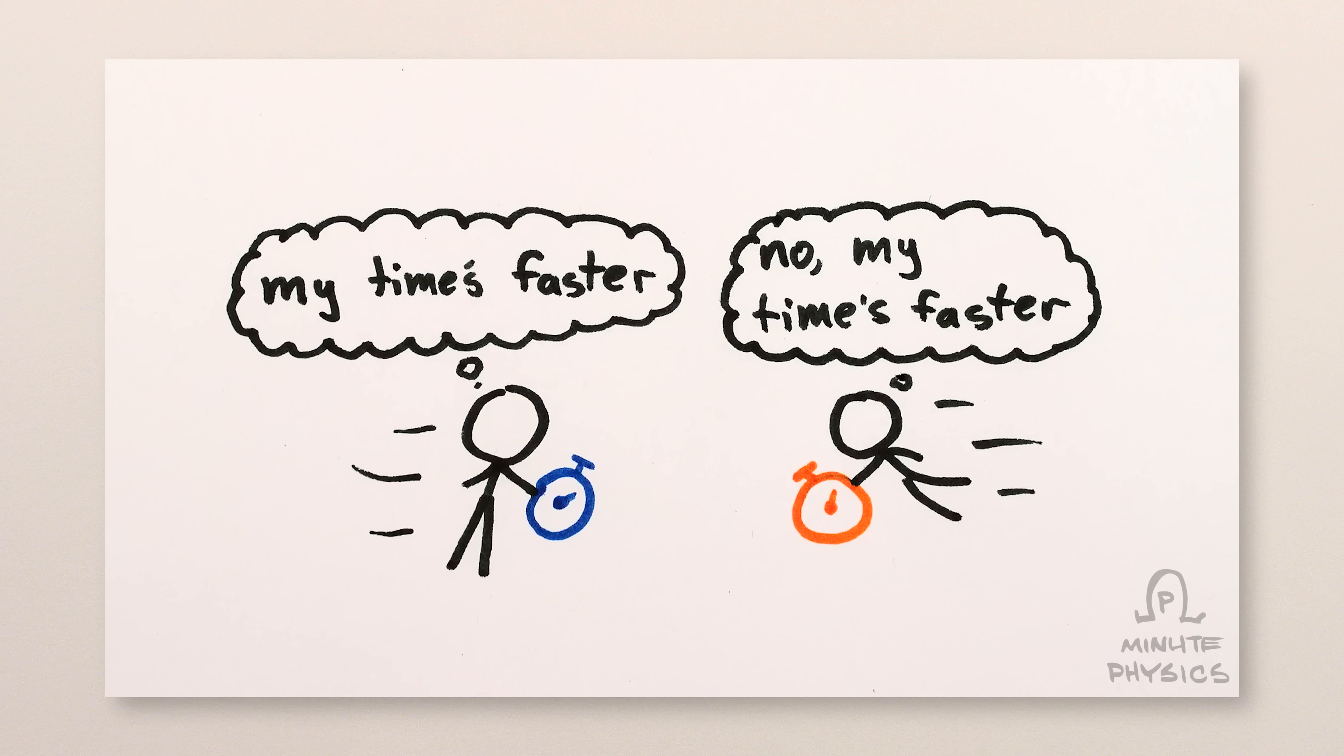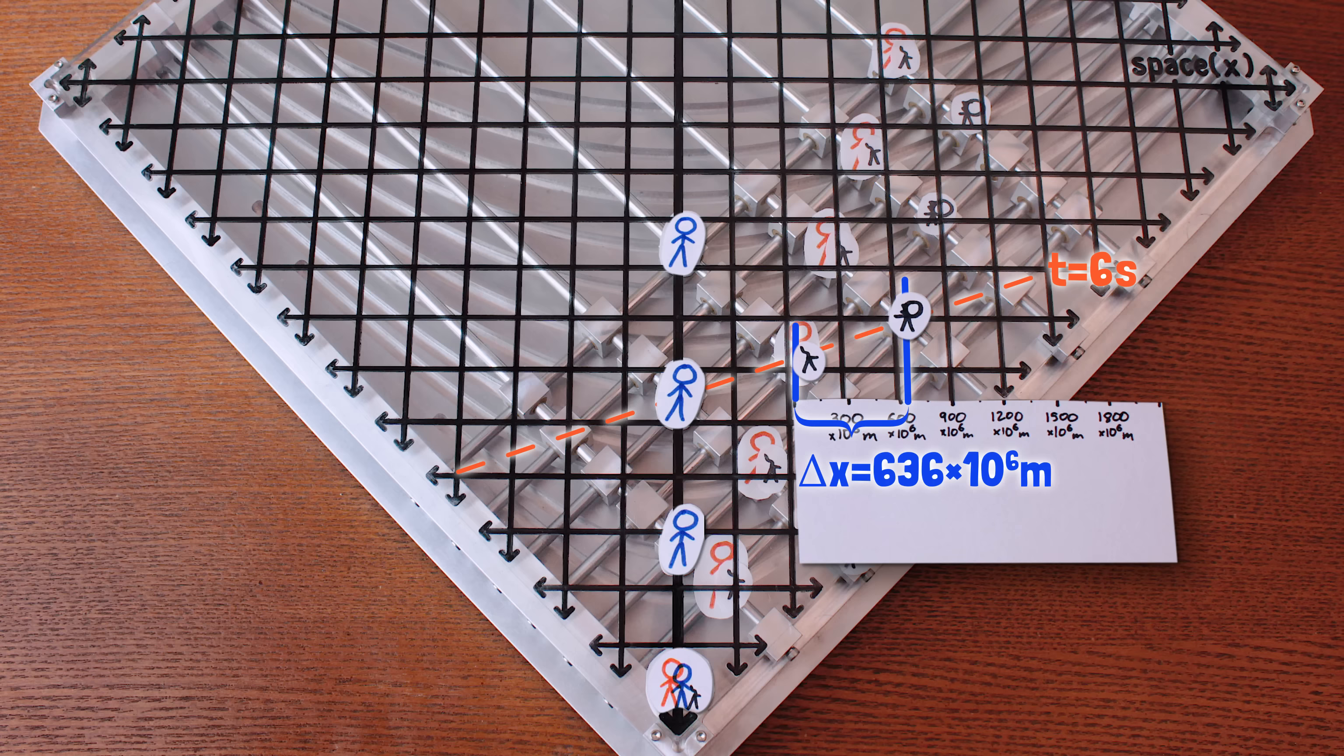And this is indeed true. From your perspective, the distance between the cat's tail at my time t equals 6 and the cat's head at my time t equals 6 is indeed longer. It's now 636 million meters, dilated by the exact same factor as in time dilation.